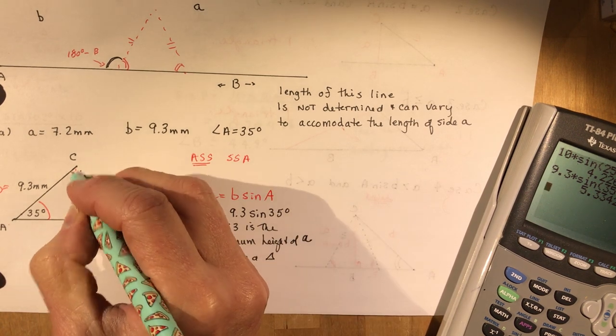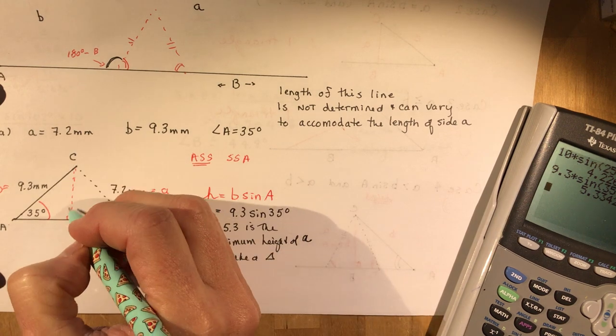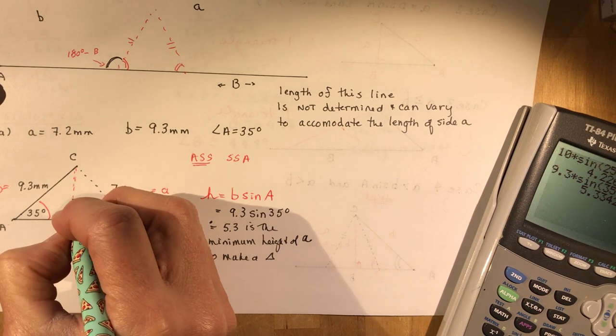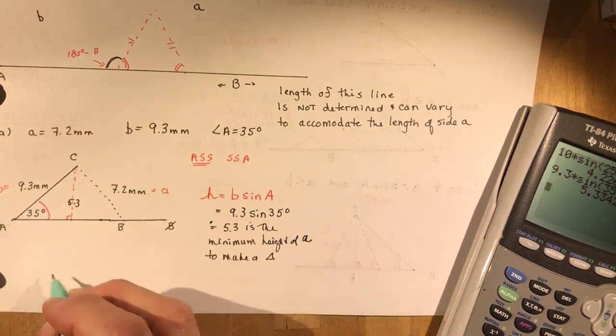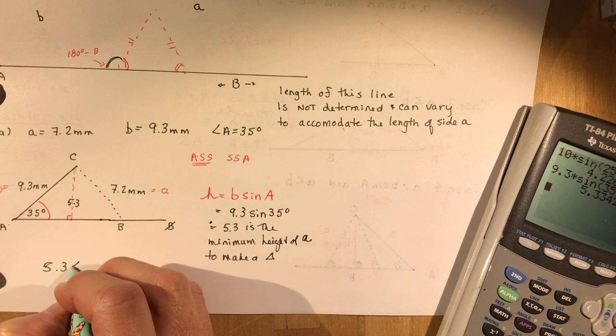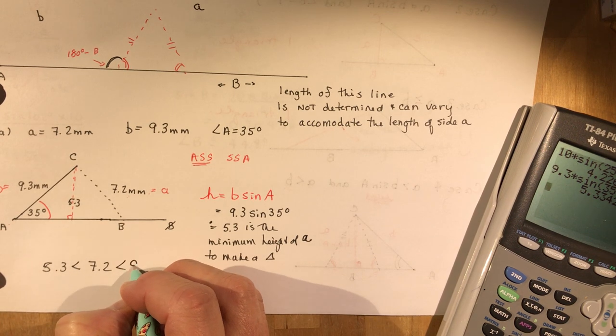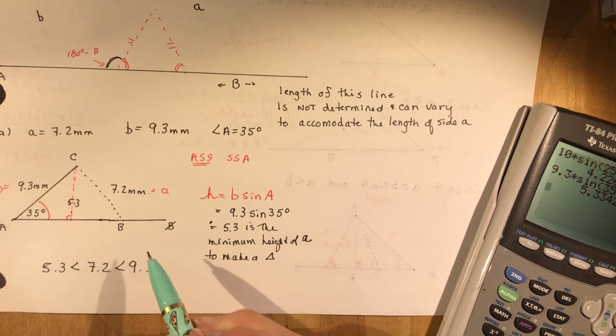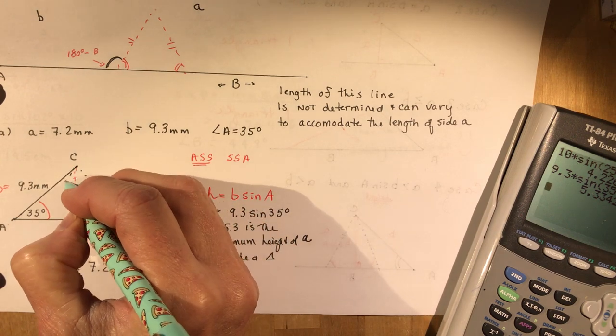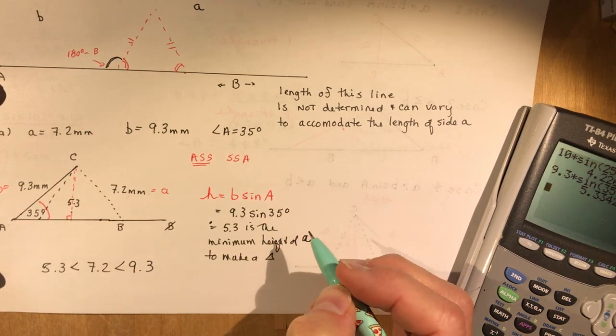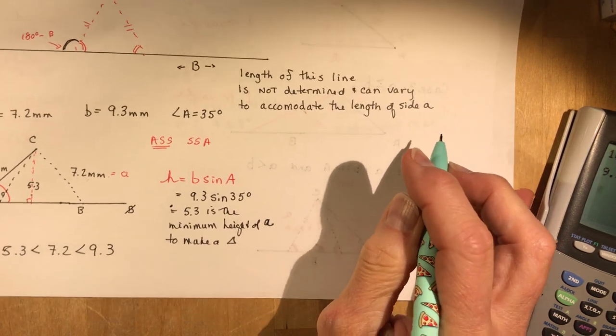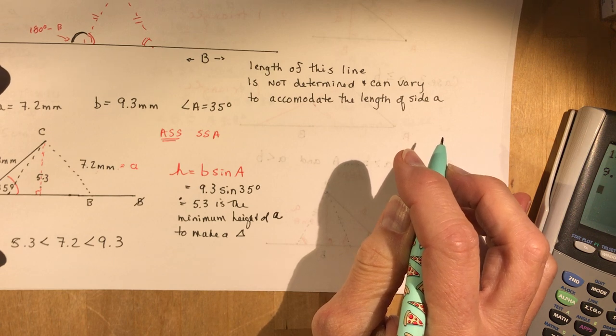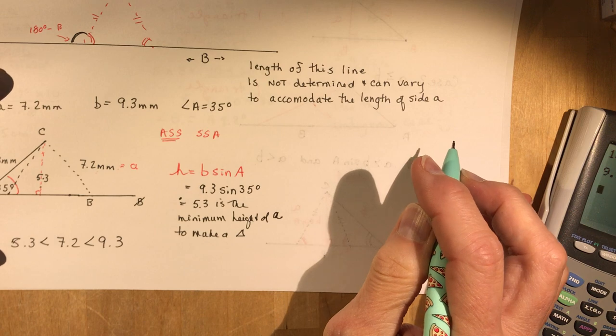So this would have to be at least 5.3, but it's 7.2 so 7.2 is bigger than this. So 7.2 is between these two, so it's smaller than this one but bigger than this one so that means I could put this in here as well. So you're asked to sketch the triangles and give all the side lengths, label all the side lengths to the nearest tenth of a centimeter and all angles to the nearest degree.